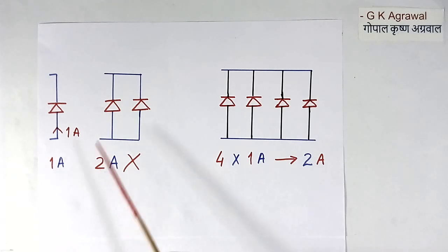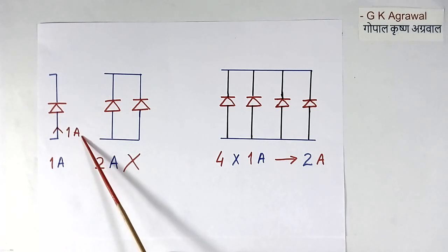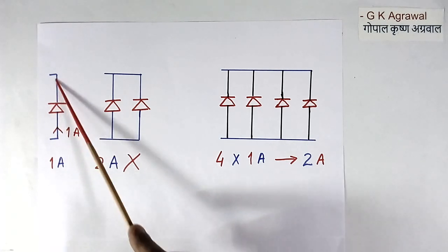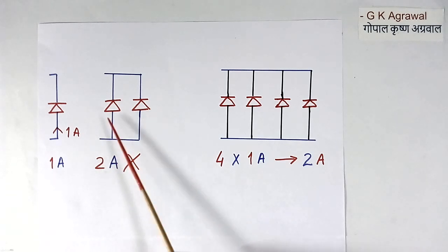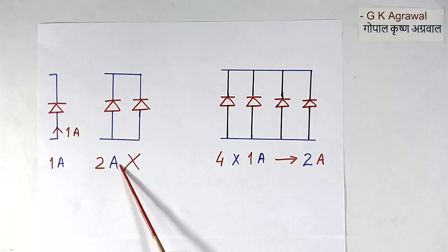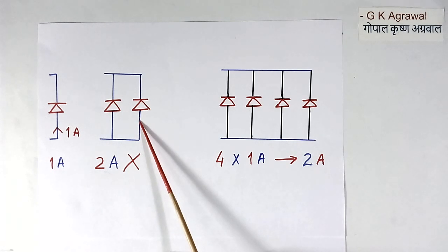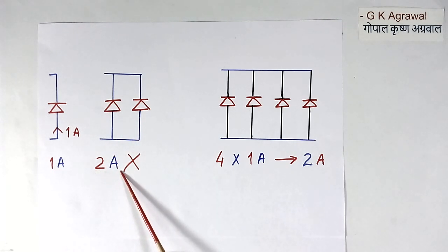Now parallel connection of diodes. Suppose one diode can take 1 ampere and it is in forward bias. Now if we connect 2 diodes in parallel, they will not take 2 ampere current. We think that 1 ampere will flow in this diode, 1 ampere will flow in this diode, so total 2 ampere current. It is not like that.